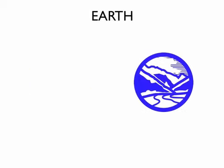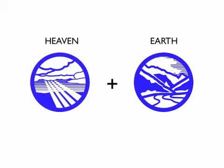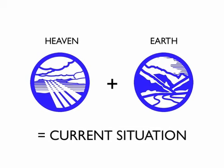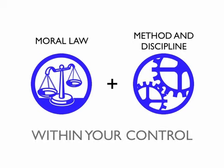Earth could be geography, roads, or laws. Make sure your plans work within the constraints you face. These two factors together form the full picture of your current situation.